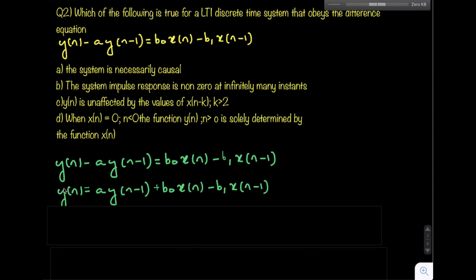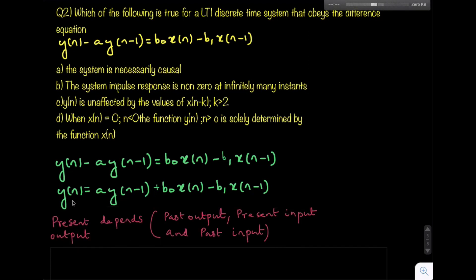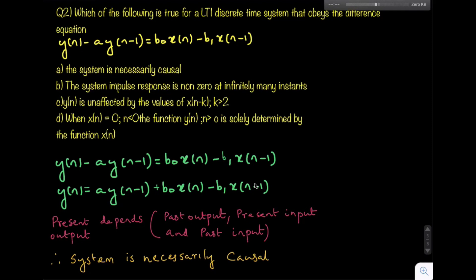Observing the equation: y(n) is the present output, y(n-1) is a past output, x(n) is the present input, and x(n-1) is the past input. The present output y(n) depends only on the past output y(n-1), the present input x(n), and the past input x(n-1). This is a clear property of a causal system — so this system is necessarily causal, and the answer is option A.